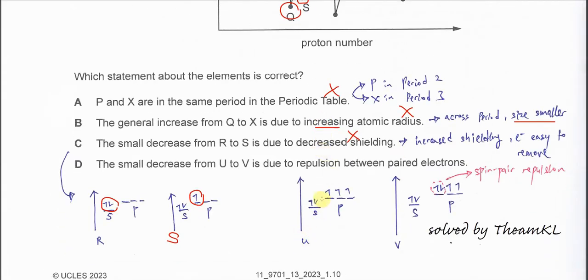So this is U, five valence electrons. So two electrons in s orbital, three electrons in p orbital. For V, which is group 16, it has two electrons in s orbital, and the p orbital has one pair of electrons.